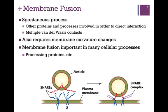There are other proteins and processes involved to direct this interaction, but it does involve multiple van der Waals contacts — that's the coiled-coil arrangement. It also involves membrane curvatures. Membrane fusion is important in many cellular processes, such as the processing of proteins from the endoplasmic reticulum to the Golgi apparatus.